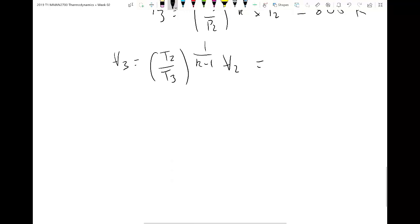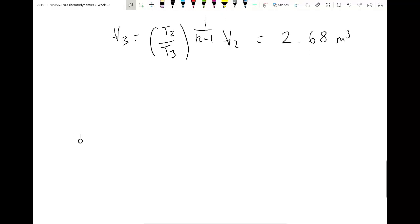So if you plug in all those values, so we know what our temperature 2 is, we know what our temperature 3 is because we just calculated that, we can then find what our volume at the third state point is, and you should find it's around about 2.68 metres cubed. All right, so that's it for state 2 to 3.